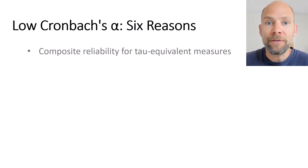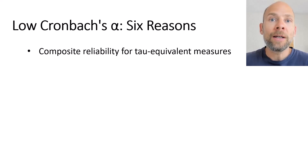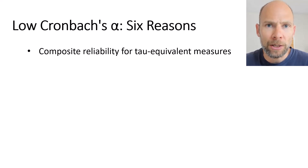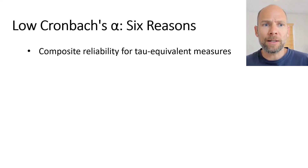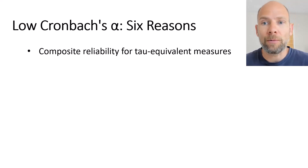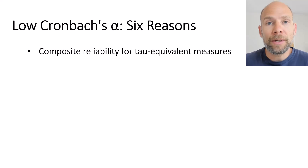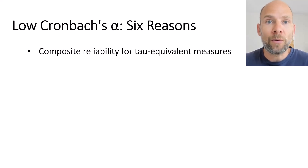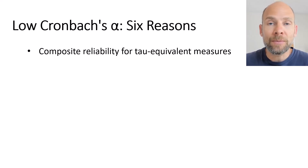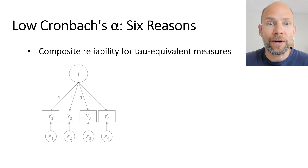Cronbach's alpha conceptually is a composite reliability index for tau equivalent measures. A composite reliability index is a reliability index for the sum or average of a number of items or tests that are supposed to measure a common latent variable or true score variable.